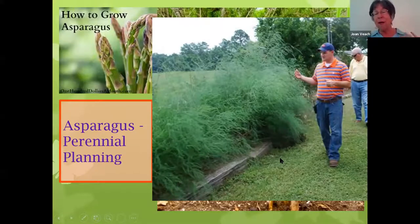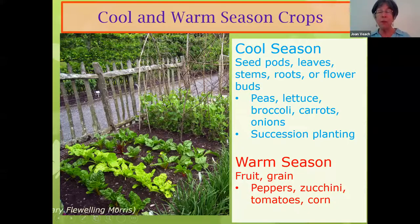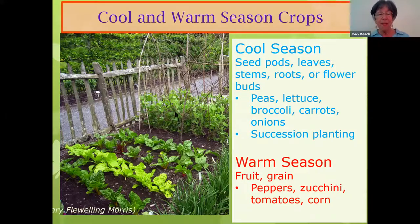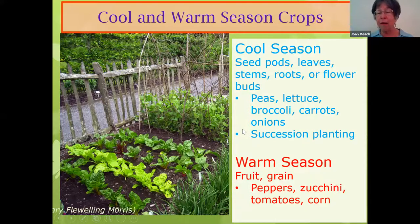So garlic and asparagus were both really unique — garlic was a bulb, asparagus was a perennial. Everything else on our list fits into one of two categories: warm and cool season crops. This is a garden with cool season crops planted. Our list includes peas, lettuce, broccoli, carrots, and onions. With cool season crops, you're eating parts of the plant: seed pods, leaves, roots, stems, and even flower buds — which is what you're eating with broccoli.